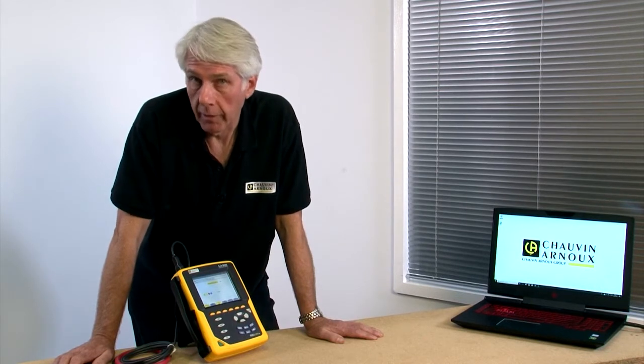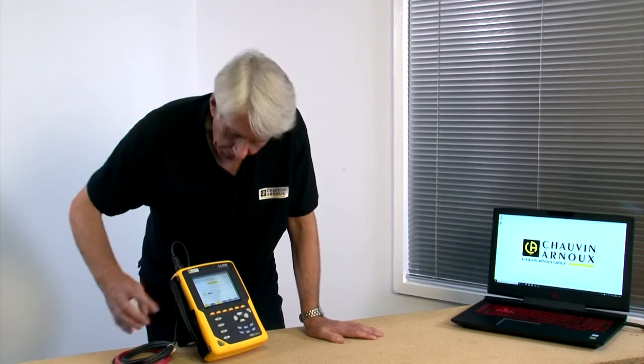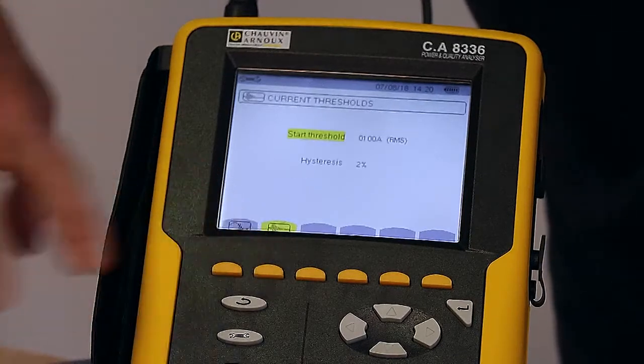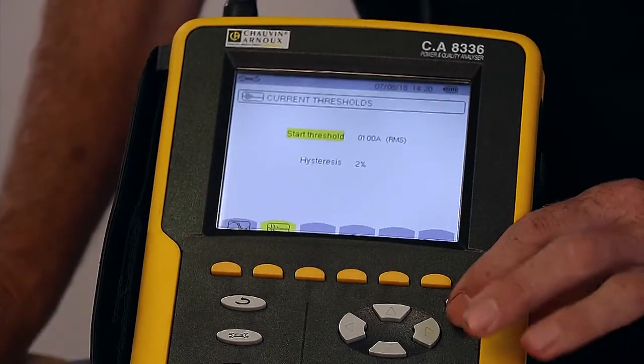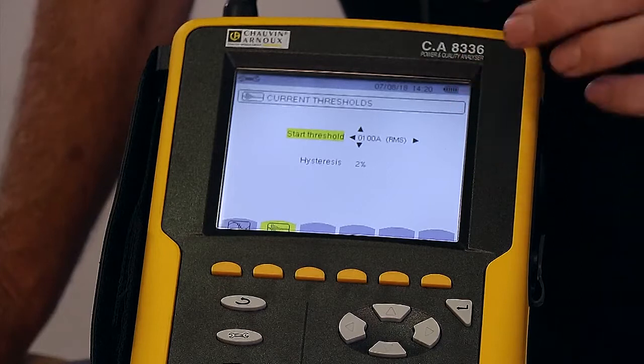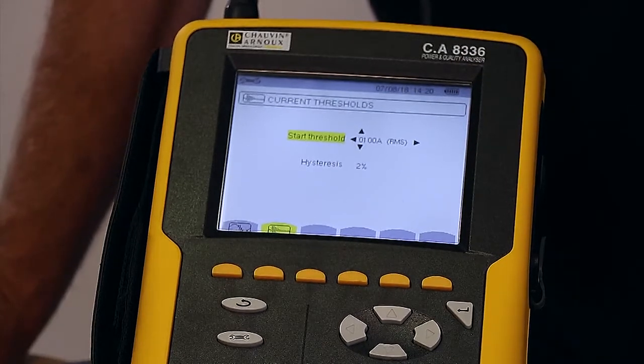Within capture mode, we can also set up the parameters for motor inrush current. So by pressing the fast button here for inrush, selecting Enter, we can set a current limit above which inrush currents will be measured.